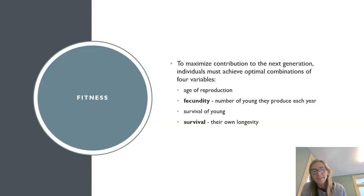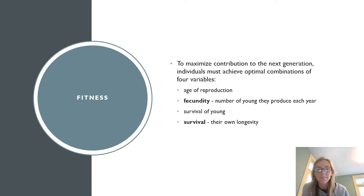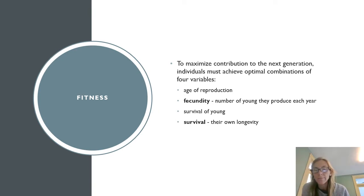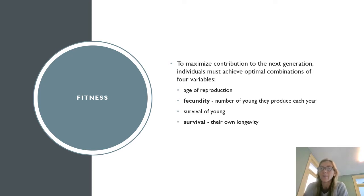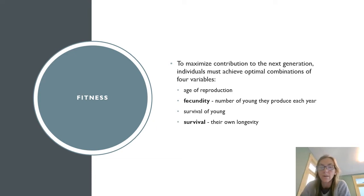It's also good to think specifically about the factors that affect birth rate or fitness within a population — that is, the contribution to the next generation by any individual. It's usually achieved by the optimal combination of four variables: the age of reproduction, fecundity or number of young produced each year, the likelihood that those young will survive, and the survival and reproductive lifespan of the adult.